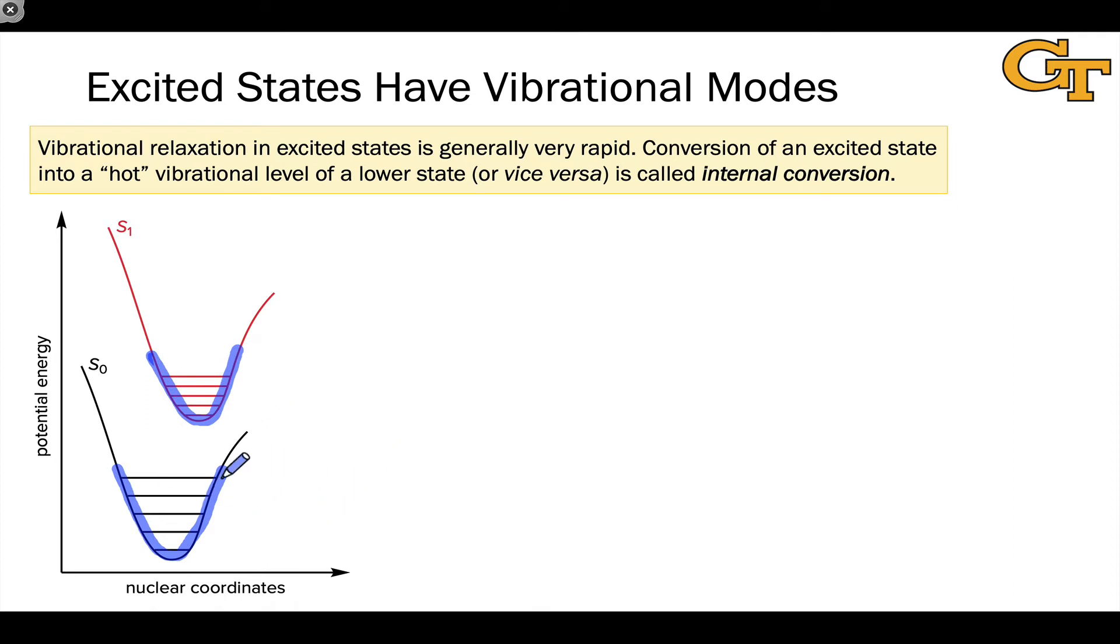As vibration happens, the nuclei change positions. So we can imagine, for example, a representative point moving back and forth from one side of the well to the other as it vibrates. And each of these vibrational levels has a specific wave function. So let's blow that up for the excited state and look at a couple of these.